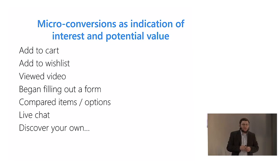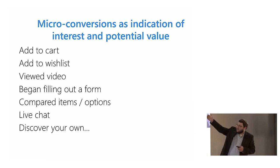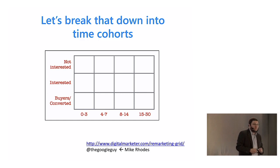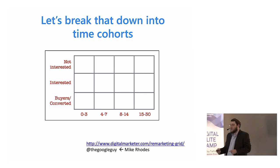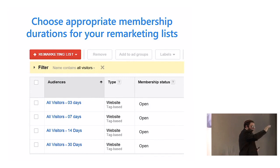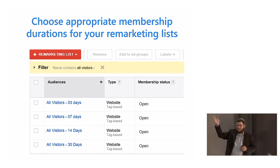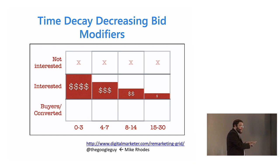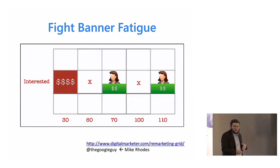Take any of these micro conversions — people who add to cart but don't convert, what are they doing? What is indicative of intent at different levels? Then, as Mike Rhodes says, take those interested folks and break them into time cohorts: zero to three days, four to seven, one week, the second half of the month. Create a list for each time frame — three days, seven days, fourteen days — and when combining, add them as negatives and excludes. You can change it so you have time-decay decreasing bid modifiers.